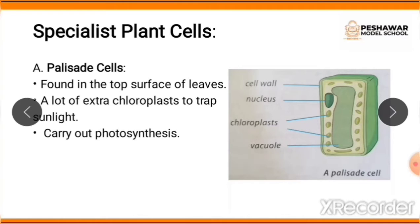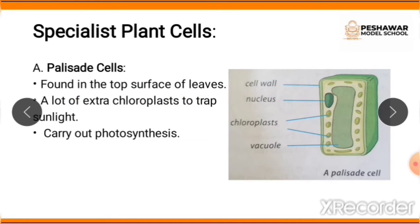The first specialist plant cell we are going to discuss is palisade cells. The structure is shown in the diagram — you can see the cell wall, a nucleus, a chloroplast, and a vacuole. Palisade cells are found on the top surface of leaves, and they contain a lot of extra chloroplast to trap sunlight.